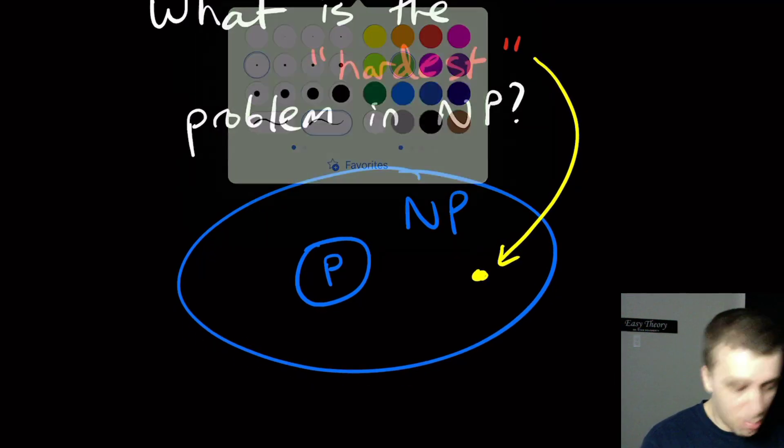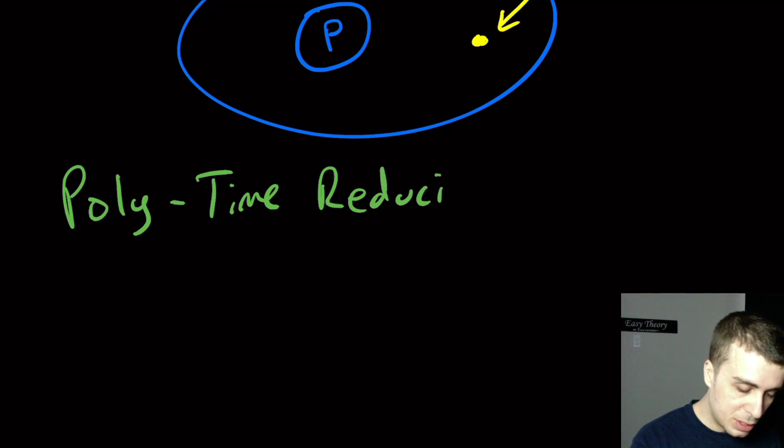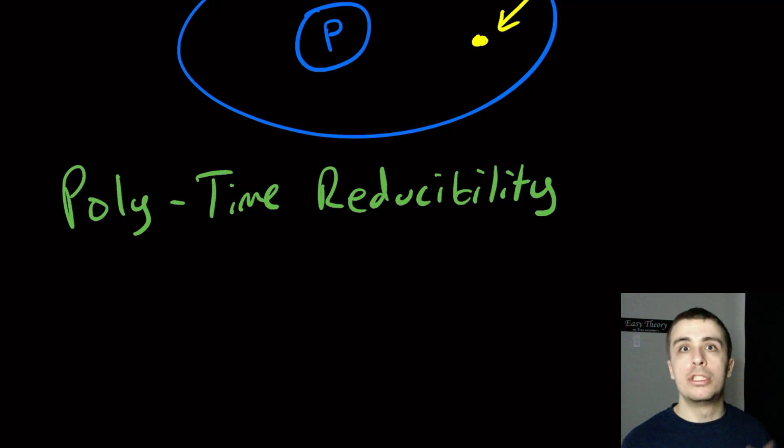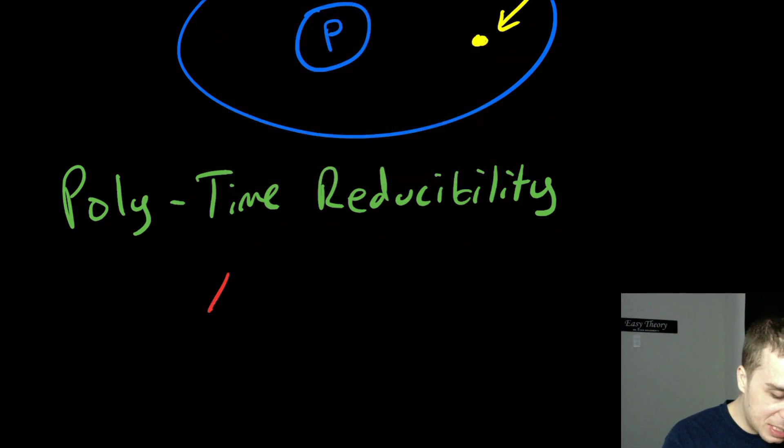We're going to look at one possible way of approaching this which is called polynomial time reducibility. So we talked about reducibility in the intro theory series, which is we have two problems and we say that one reduces to the other one if there is a computable function taking inputs of one to the other where the answers are the same. Now we're going to actually have a restriction on the type of reductions here, which is that they run in polynomial time.